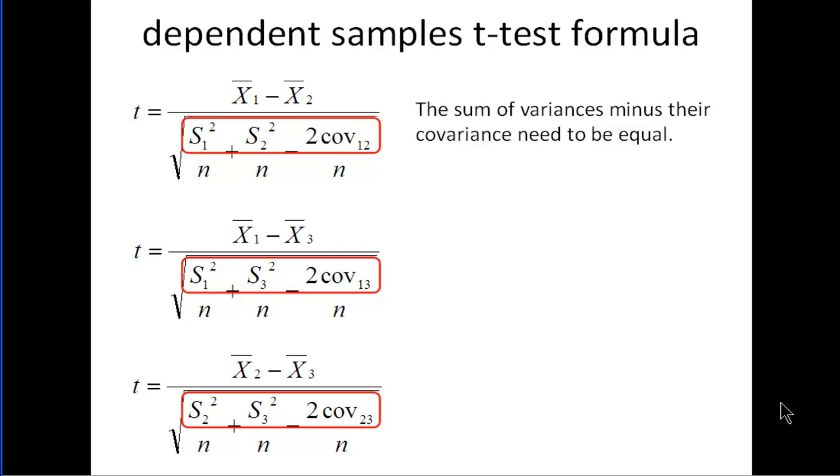In the repeated measures ANOVA, the differences between the variances and the covariances associated with each mean comparison, those have to be equal. So each of these three sums of the variances minus covariance have to be equal.